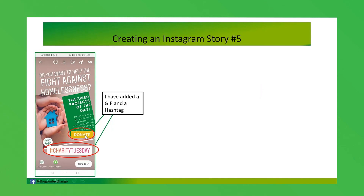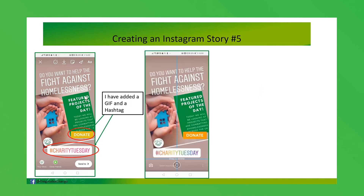I've added a GIF here which flashes different colors — you can't see it as it's a picture. I've also added a hashtag. This smiley face icon is really good to click on and have a play around with; it's a great way of making your story eye-catching. Just go in and have a little play to see what's there and what you'd like.